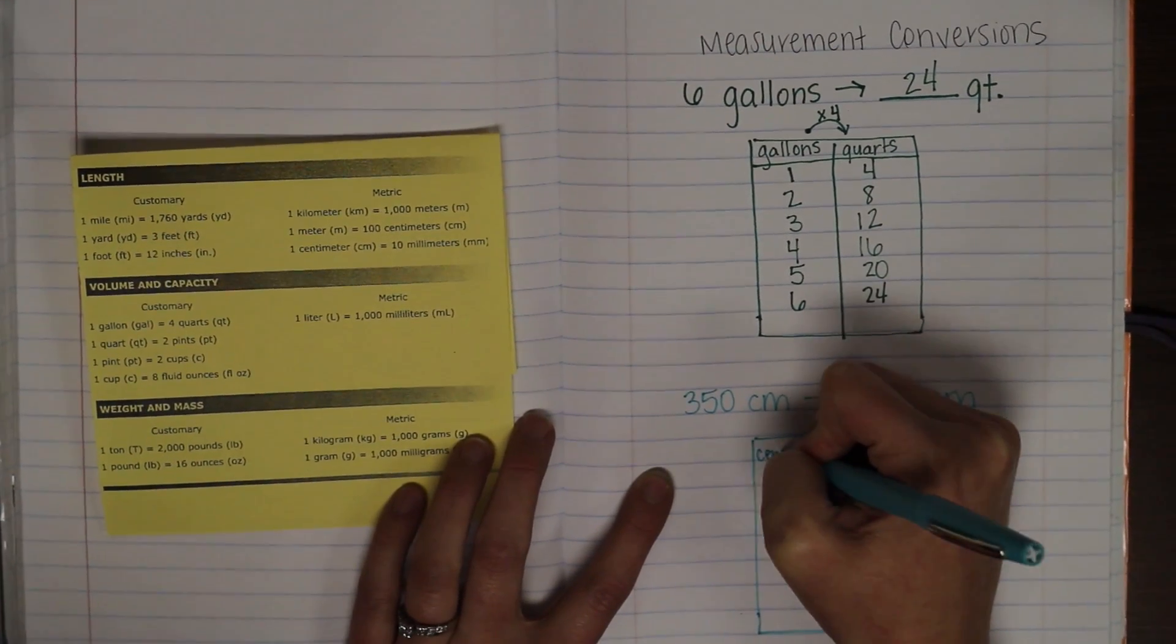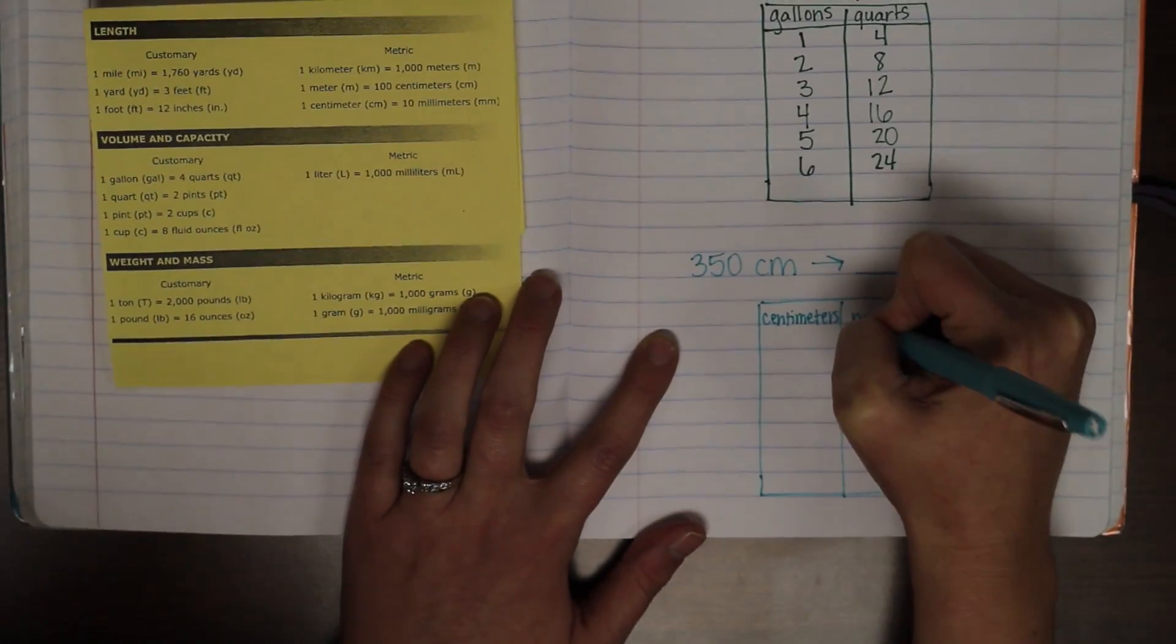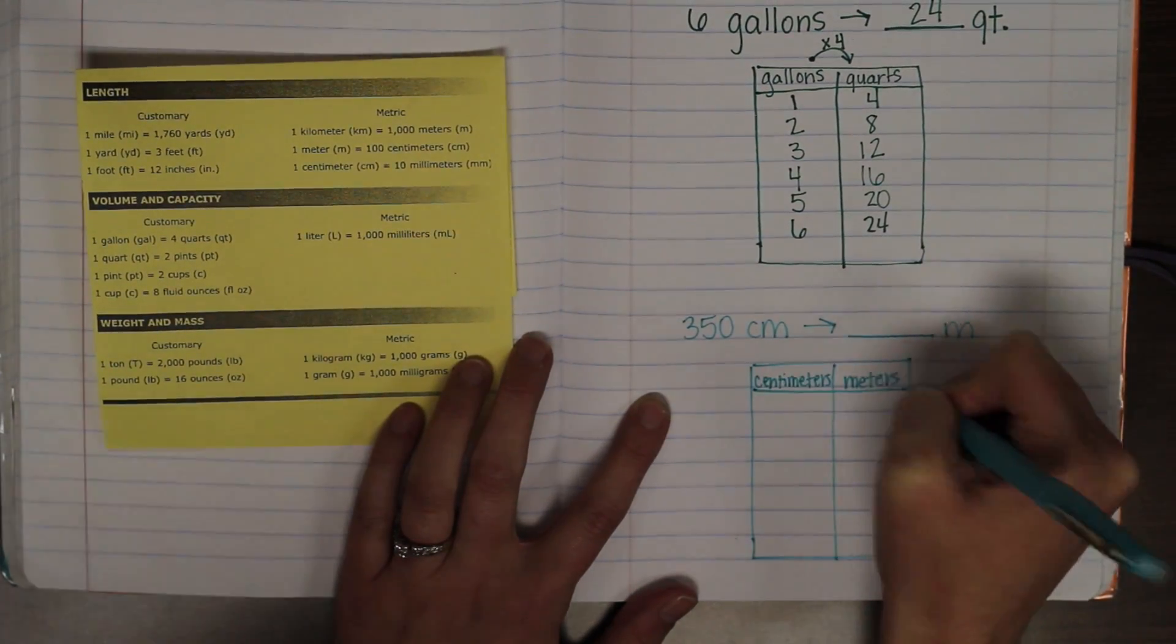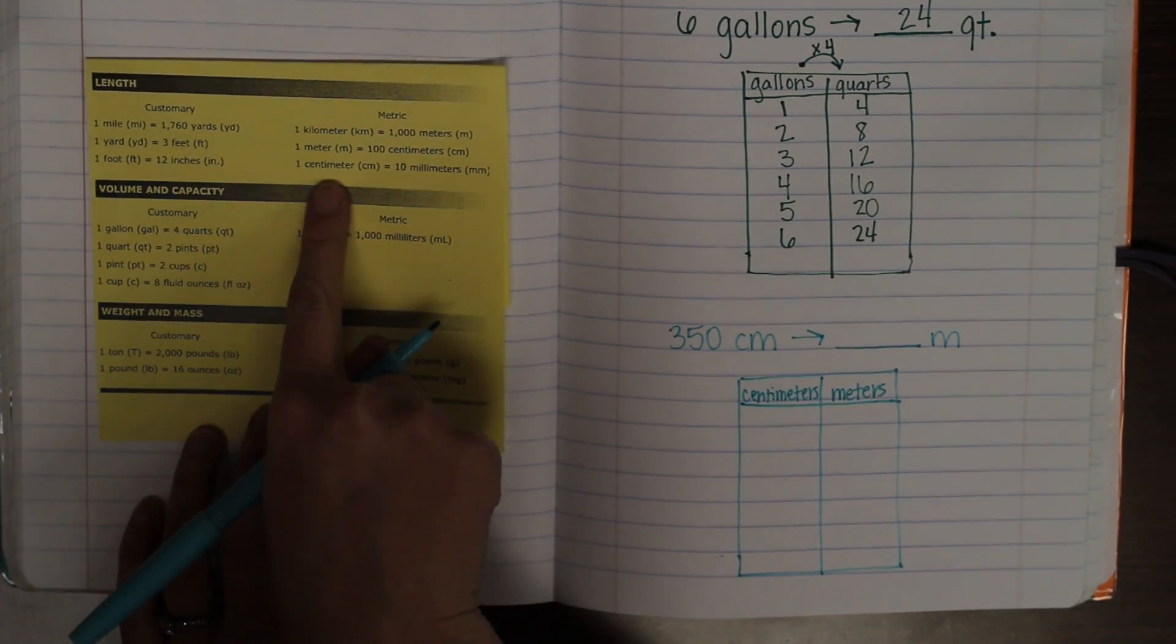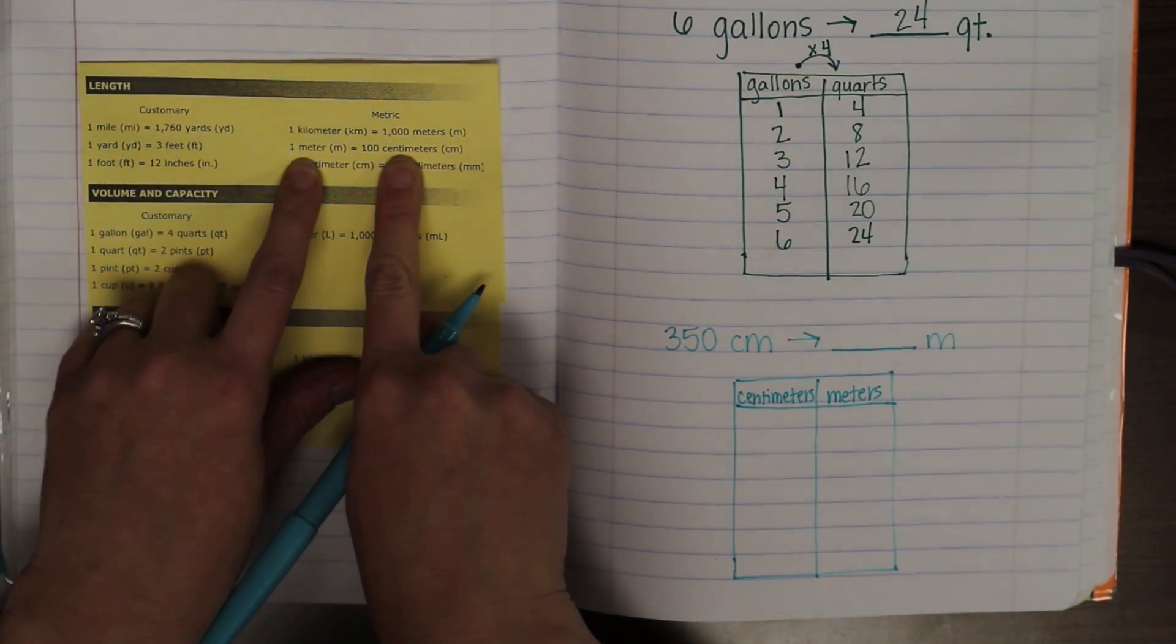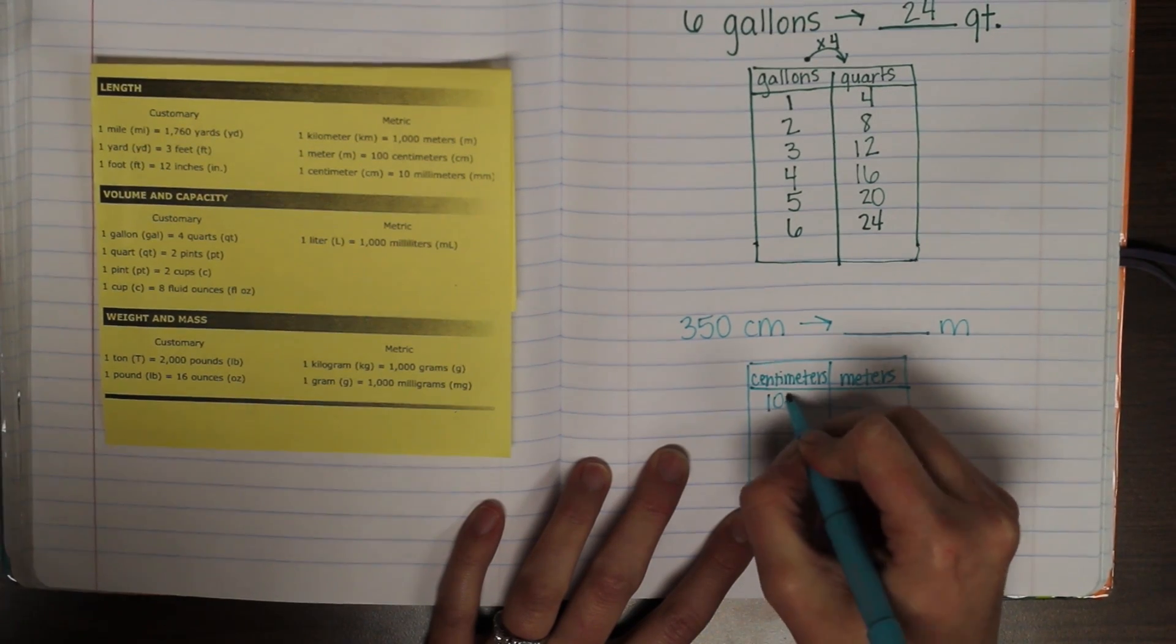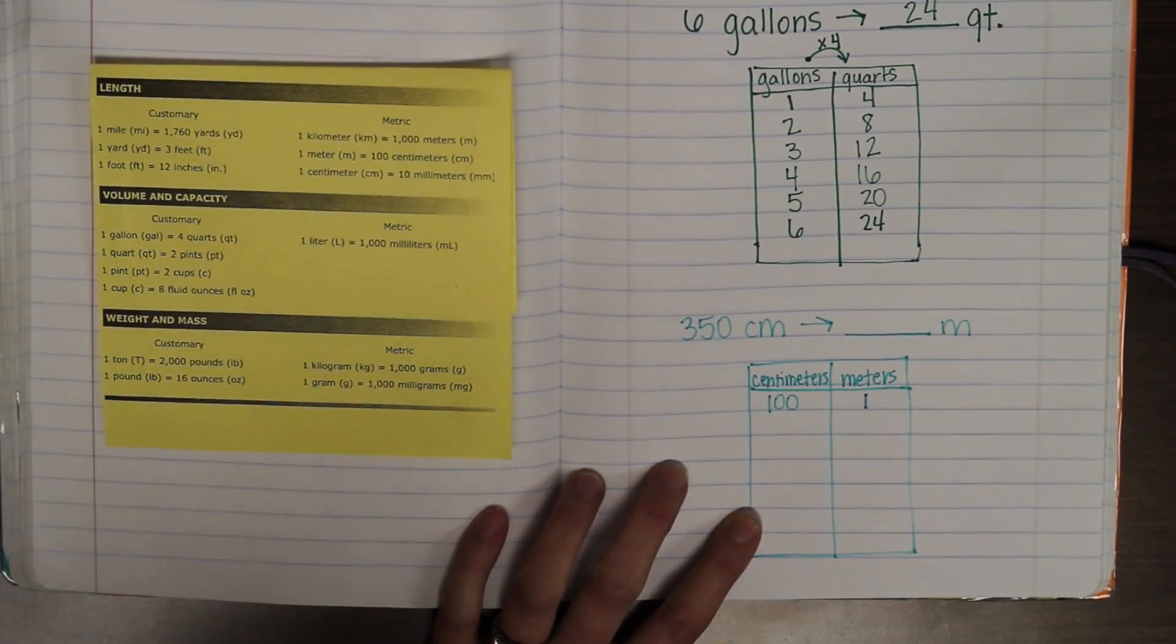Centimeters. Meters. Okay. Looking at our star chart, we are going to find the relationship between centimeters and meters. Right here. One meter is a hundred centimeters. So, on our table, we're going to put one hundred centimeters and one meter.